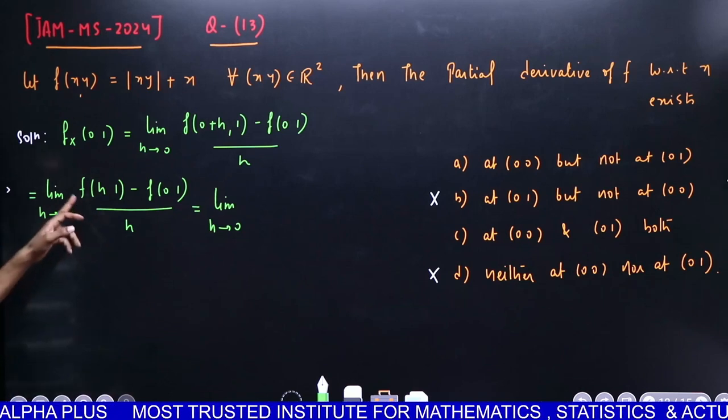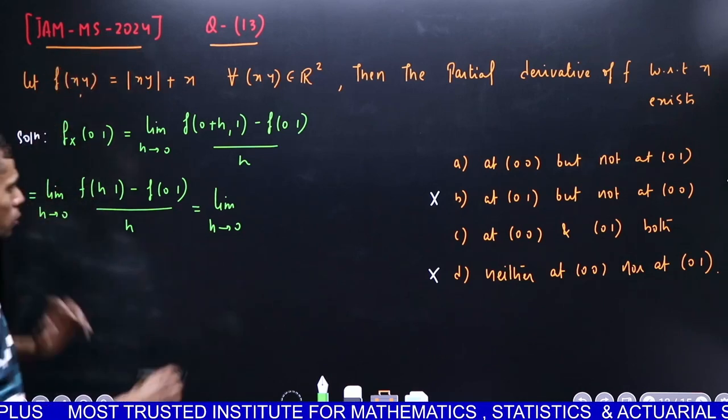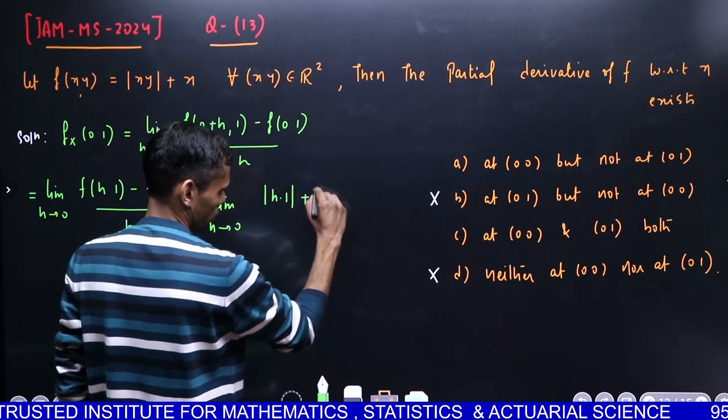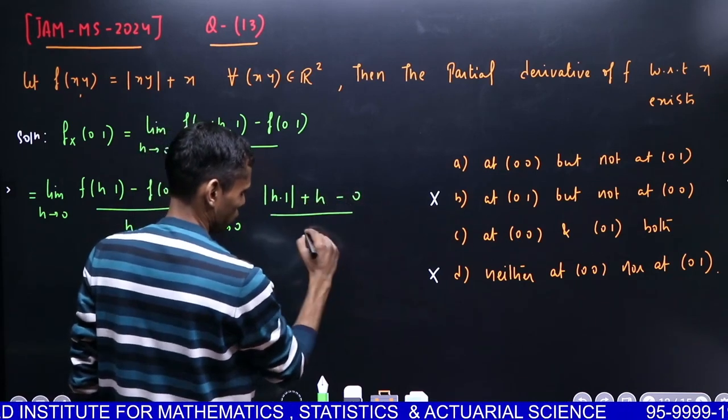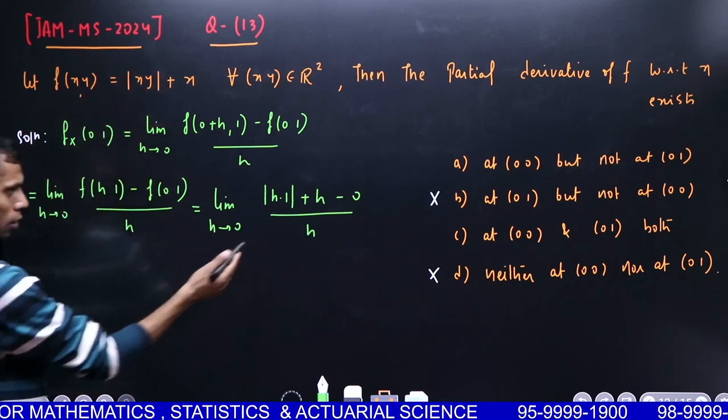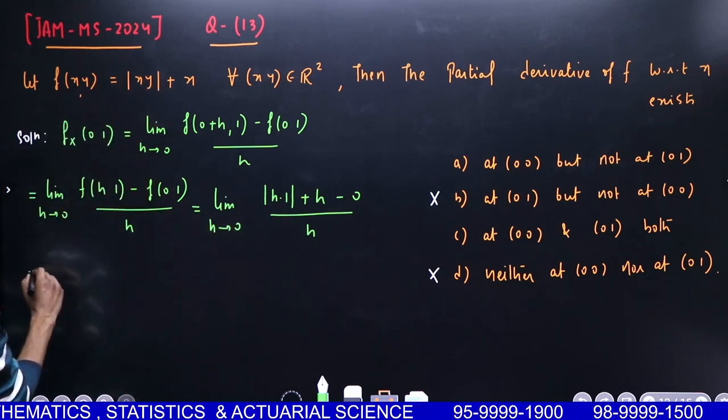This is limit h→0 of [f(h,1) - f(0,1)]/h. Let me write all values carefully. f(h,1): put x = h, y = 1, which gives |h+1|. This becomes [|h+1|+h-0]/h.